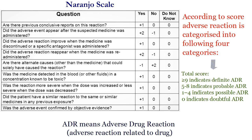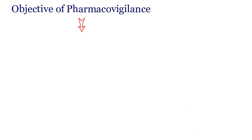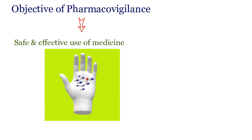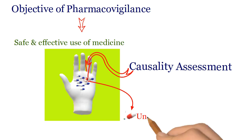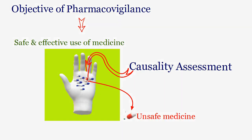For drug safety, it is always preferable to identify the medicines which are performing badly, and taking corrective steps to prevent further damage is important. As we know, the objective of pharmacovigilance is to ensure safe and effective use of medicine. Causality assessment works toward finding out the exact medicine which has caused a particular adverse reaction, thereby identifying the culprit medicines and fulfilling the objective of pharmacovigilance.